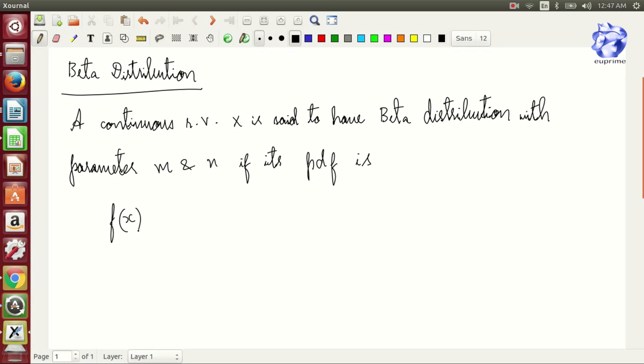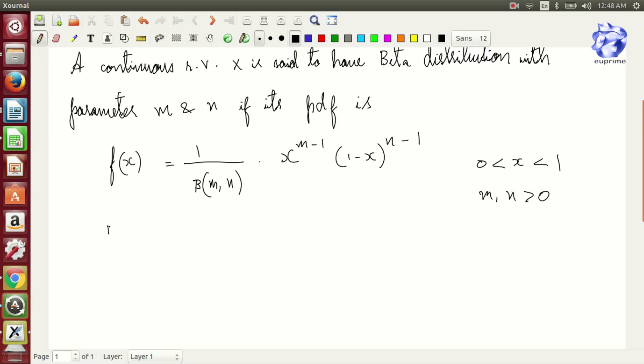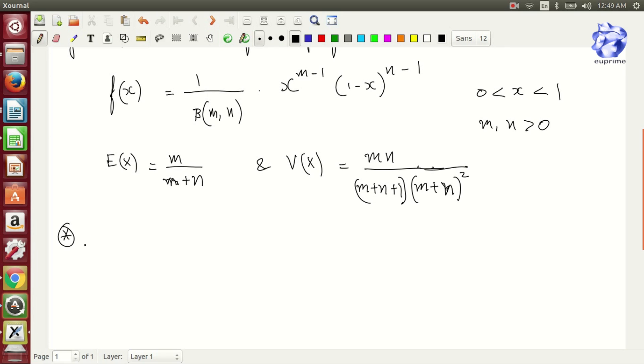f(x) equals 1 over beta of (m,n) into x to the power m minus 1 multiplied by (1-x) to the power n minus 1, where x varies between 0 and 1, m and n are greater than 0. Mean E(x) is given by m/(m+n) and variance of x is given by mn/[(m+n+1)(m+n)^2].